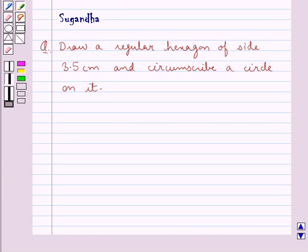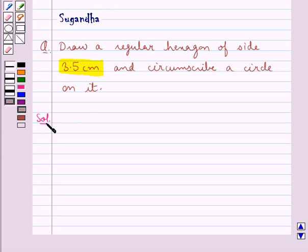Hello and welcome to the session. In this session we discuss the following question: Draw a regular hexagon of side 3.5 cm and circumscribe a circle on it. Let's start with the construction now. For this we would follow some steps of construction.